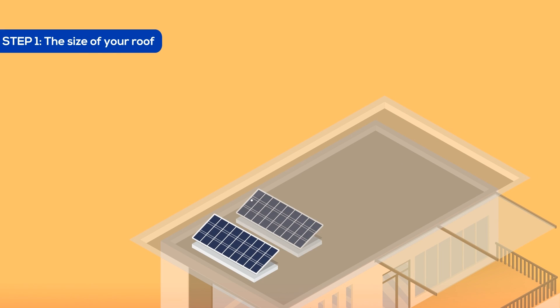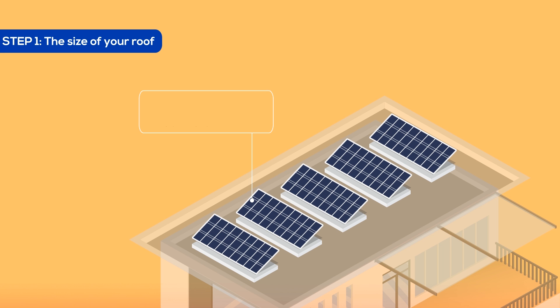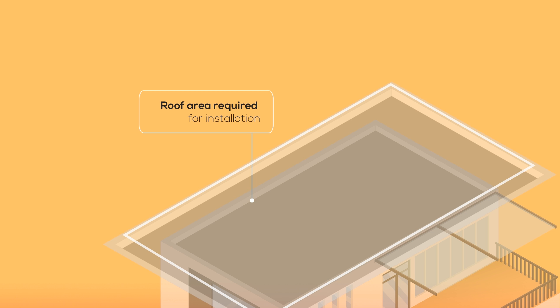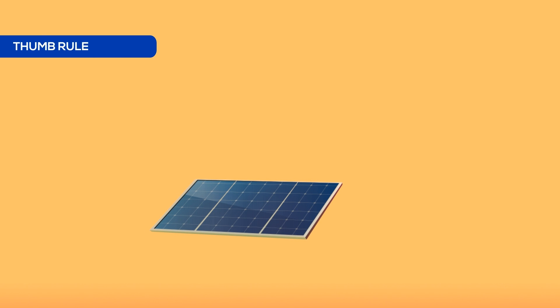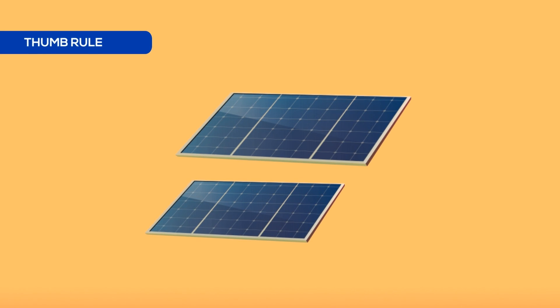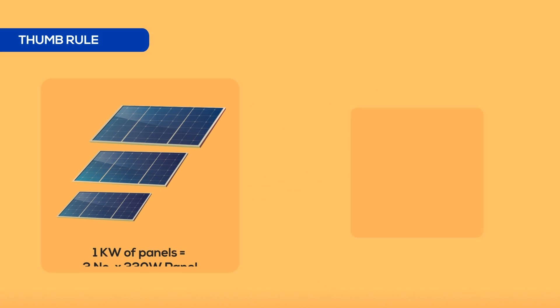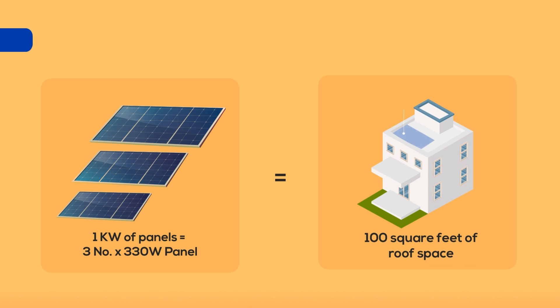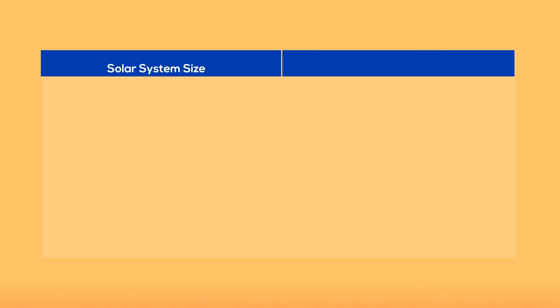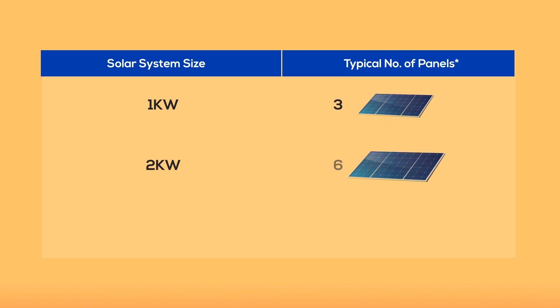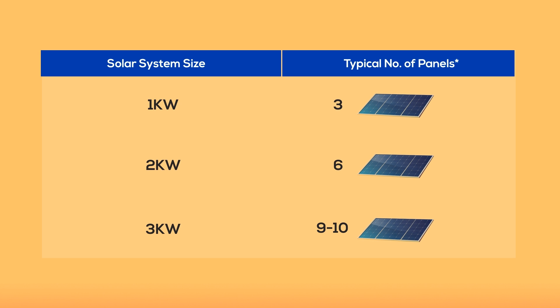The first step is to identify how many solar panels need to be installed and how much roof area is required. A general rule of thumb is that for every kilowatt of panels you want to install, you will need three panels of 330 watts and about 100 square feet of roof space. You can refer to this chart to know how many panels are required for different sizes of solar systems.